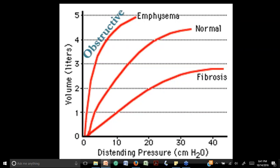In obstructive emphysema — including asthma, chronic bronchitis, and COPD — the compliance pressures follow one pattern. In fibrosis (sarcoidosis, restrictive disease), the pressures needed for compliance are higher because fibrous tissue does not have the elasticity of normal lung tissue — so the compliance and ability to distend the lung is lost.